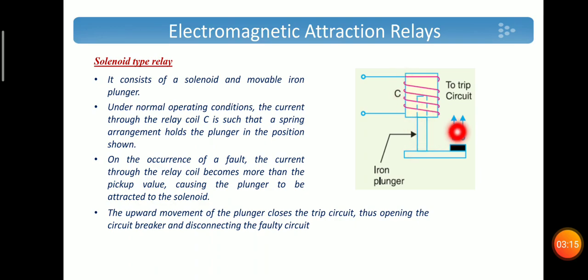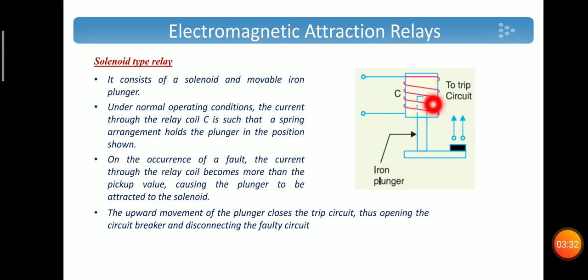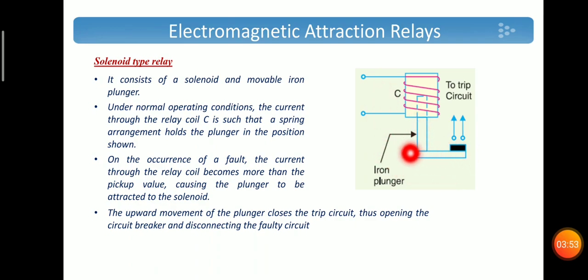The only difference is in the construction. It consists of a solenoid and a moving iron plunger, and the solenoid is wound with a coil which carries the current in the system to be protected. Under normal condition there is no attractive force. When a fault occurs, the attractive force increases, the iron plunger is attracted towards the solenoid, and the trip circuit gets closed. The iron plunger is held in position under normal condition by a spring arrangement; when a fault occurs, the force exceeds the spring force and the trip circuit closes, operating the circuit breaker.